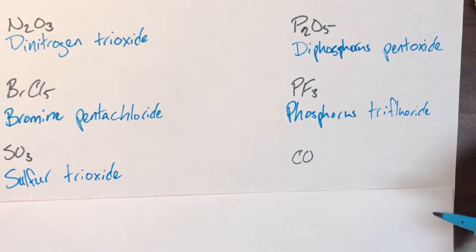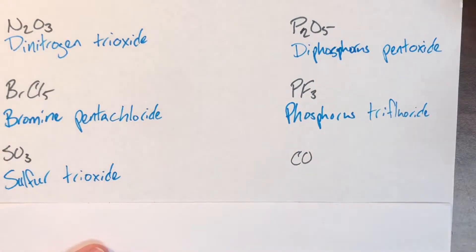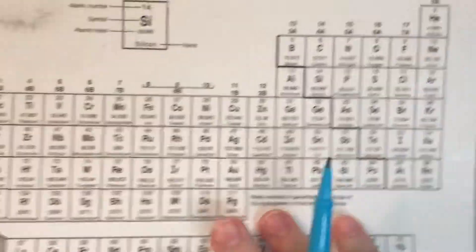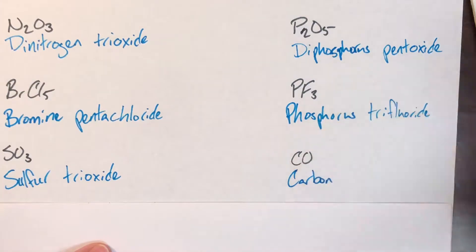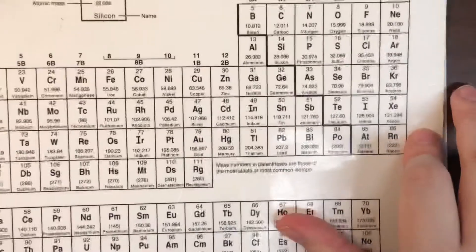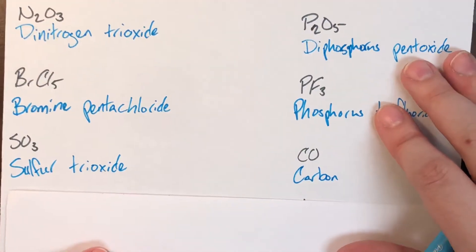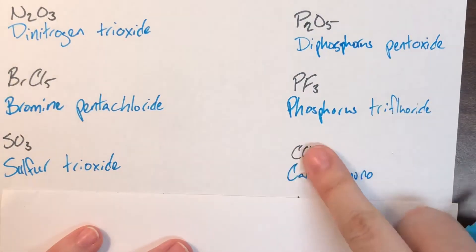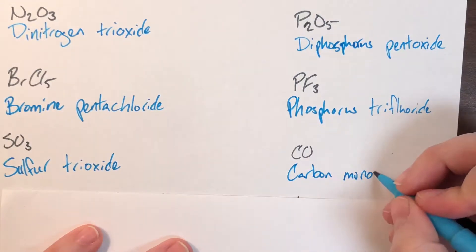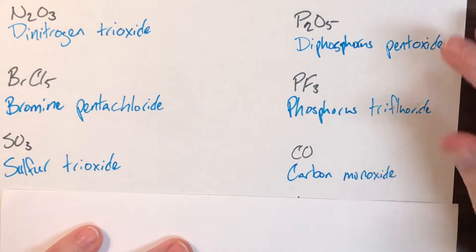Next is CO. C doesn't have a subscript, so no prefix — just carbon. O is oxygen, and there's only one of them. Remember that oxygen is special: it gets the prefix mono when it's in the second position with only one atom. So this is carbon monoxide — note no double O, just monoxide.